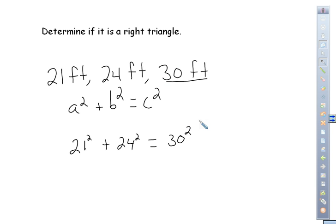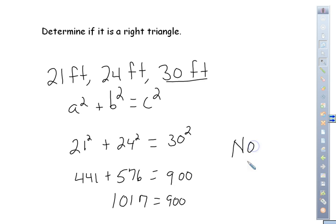So now, plug it in your calculator, and let's add these together. And you would have 21 squared, which is 441, plus 24 squared, which is 576, equals 30 squared, which is 900. So now we ask the question, is 441 plus 576 does that equal 900? No, it's 1017 equals 900. So is it a right triangle? No.